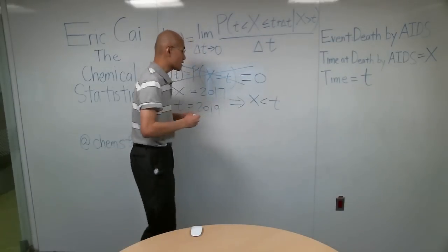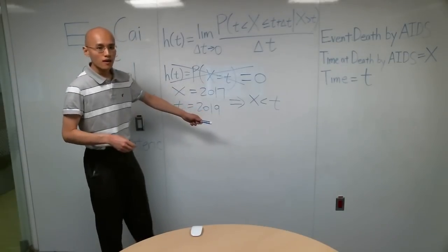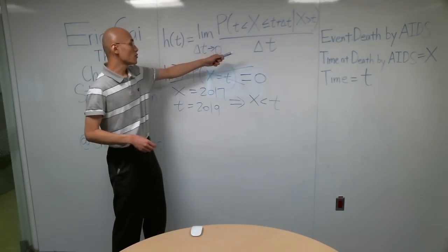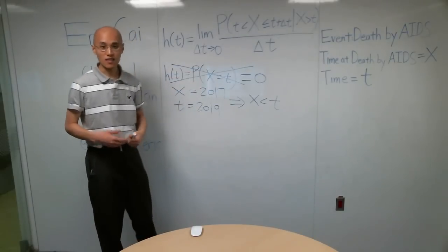then X is less than T. And if X is less than T, then the probability that X is in some interval bigger than T is equal to zero.